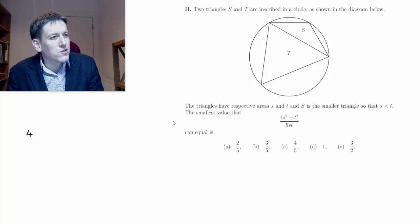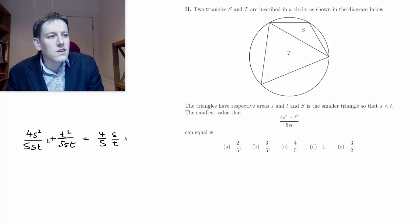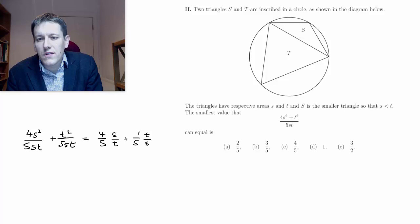I've got a sum of two things in the denominator here. So if we consider these as separated, so 4s squared over 5st plus t squared over 5st, the structure starts to reveal itself because I can cancel an s in the first one. So I get 4 fifths times s divided by t. And in the second one, cancel the t, I get 1 fifth times t over s.